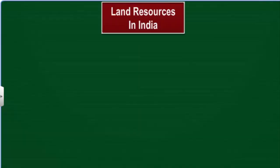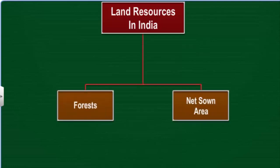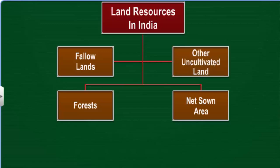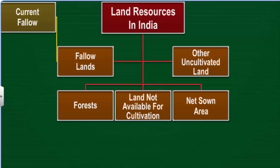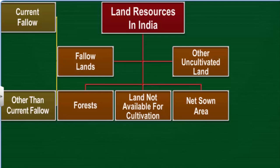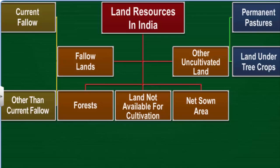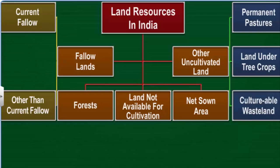Depending on their use, land resources can be classified as forests, net sown area or total area under cultivation, fallow lands, other uncultivated land, and land not available for cultivation. Fallow land can be further divided into current fallow, which is land not cultivated for one year or less, and other than current fallow, which is land that has remained uncultivated for one to five years. Uncultivated land other than fallow land is divided into permanent pastures, land under miscellaneous tree crops, and land left uncultivated for more than five years.